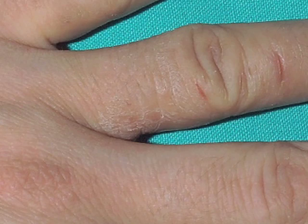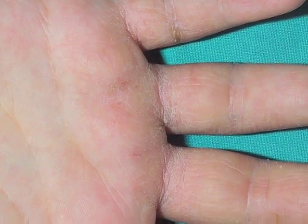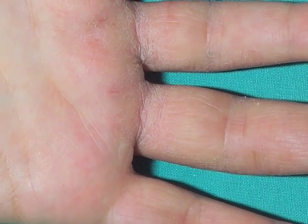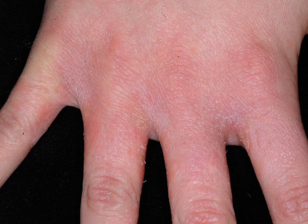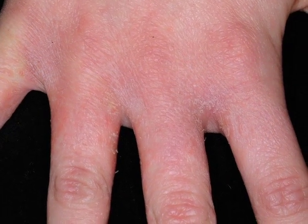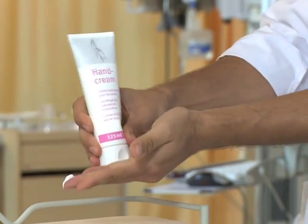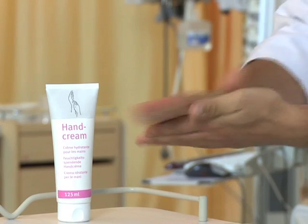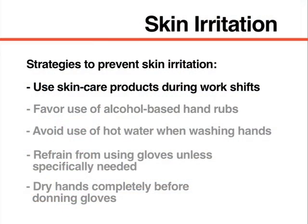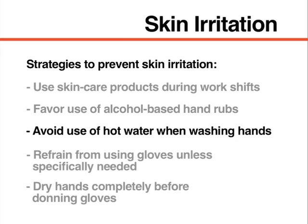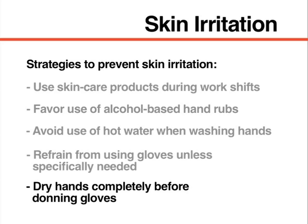There are some common problems associated with hand hygiene. Irritation dermatitis can occur after repeated use of hand hygiene products. Common symptoms include dryness, itching, and sometimes cracking and bleeding. In rare cases, allergic dermatitis can occur. Damaged skin is more difficult to disinfect and may be more susceptible to skin colonization, leading to transmission. To prevent skin irritation, use skincare products frequently during work shifts. You should also use alcohol-based hand rubs, avoid hot water when washing hands, refrain from using gloves unless specifically needed, and dry your hands completely before donning gloves.